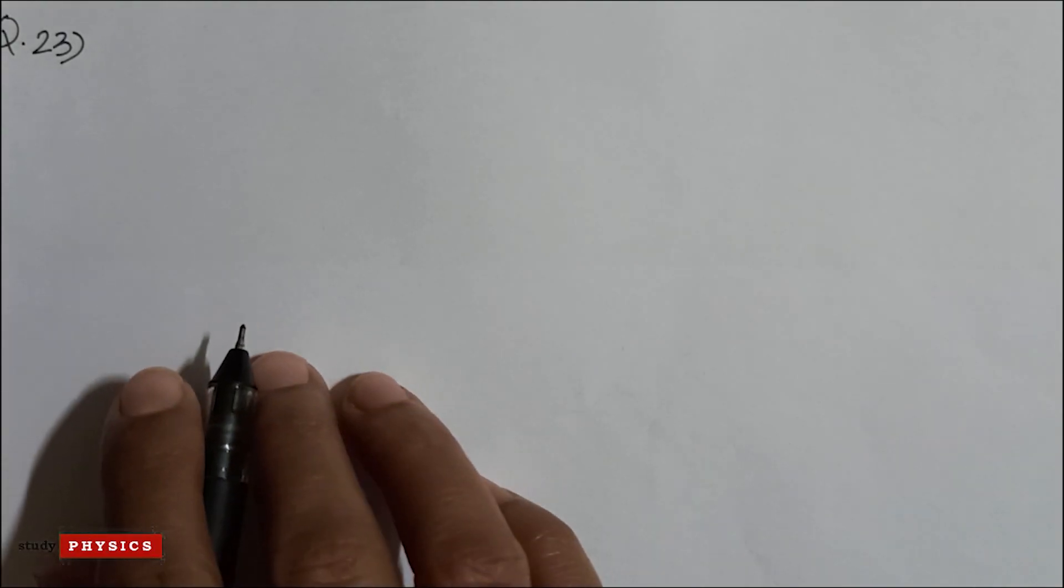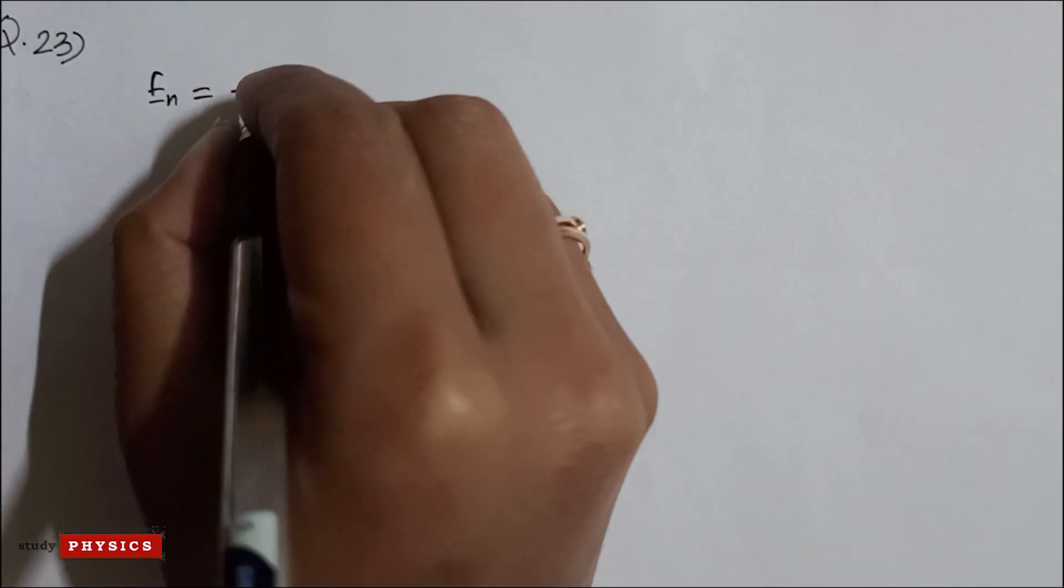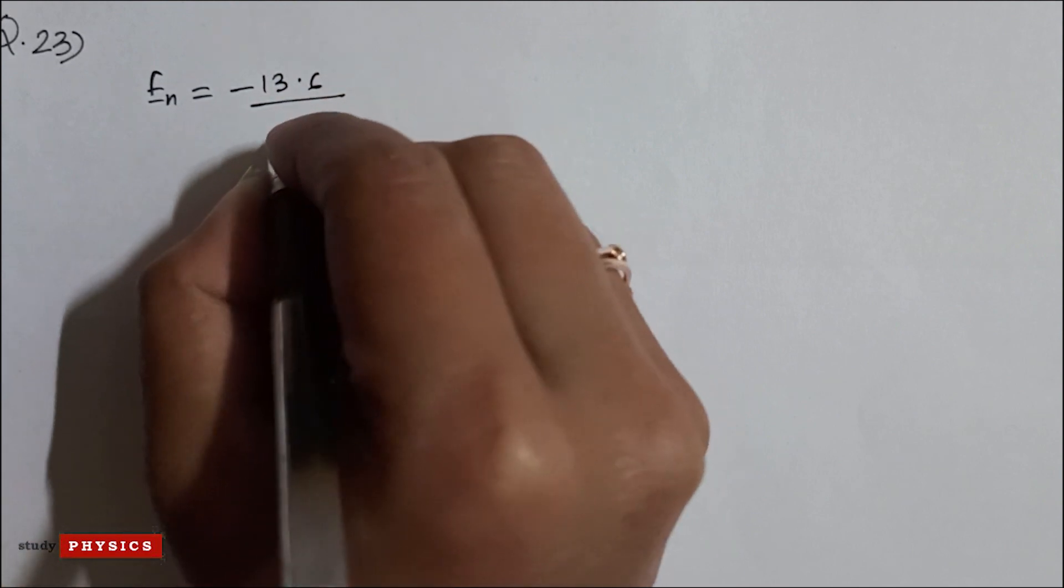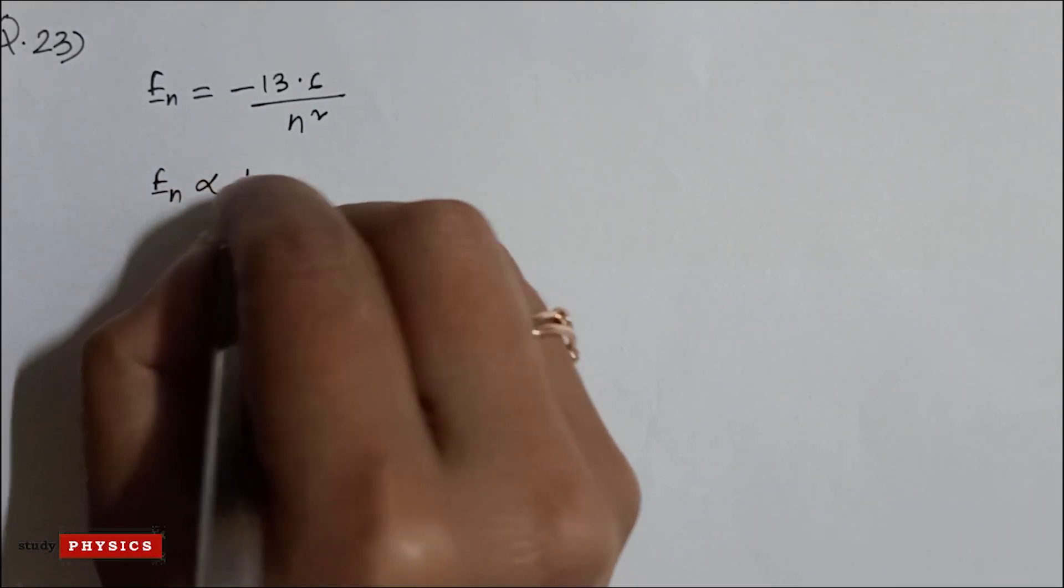We know that for hydrogen atom, EN is minus 13.6 divided by N square. So EN is proportional to 1 by N square.